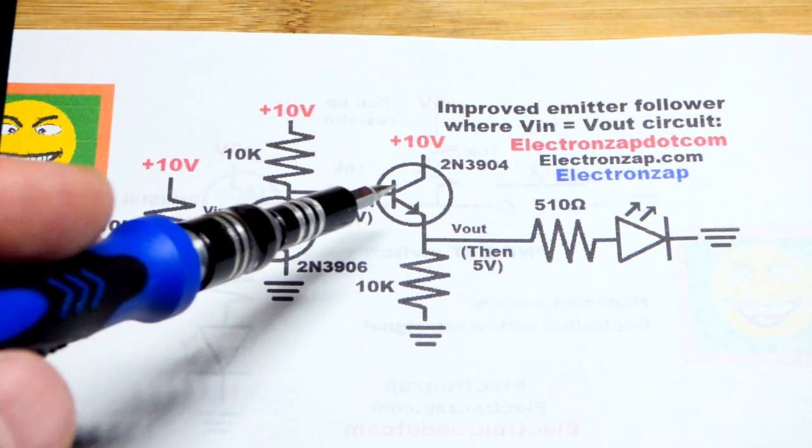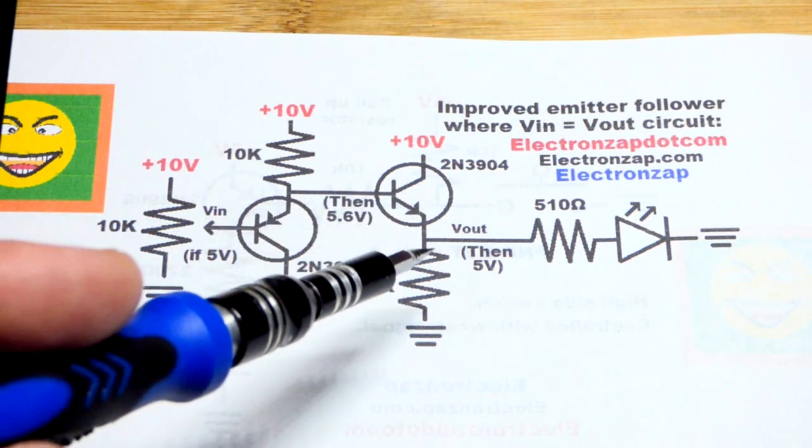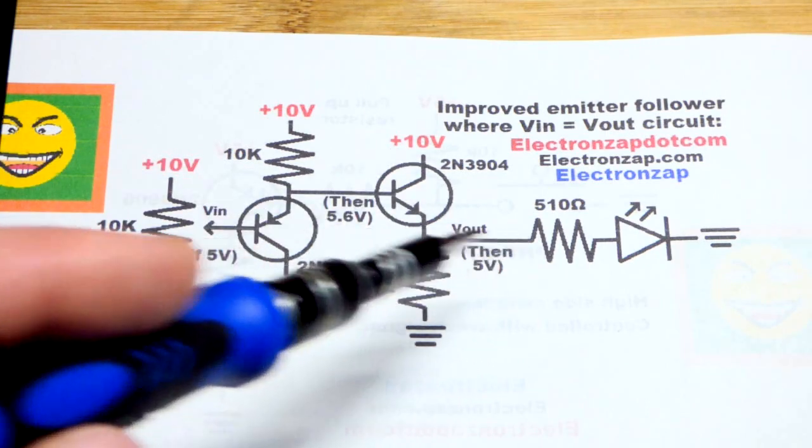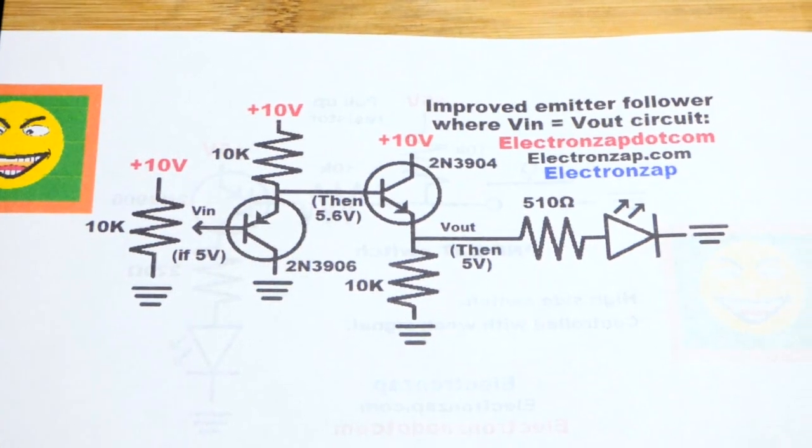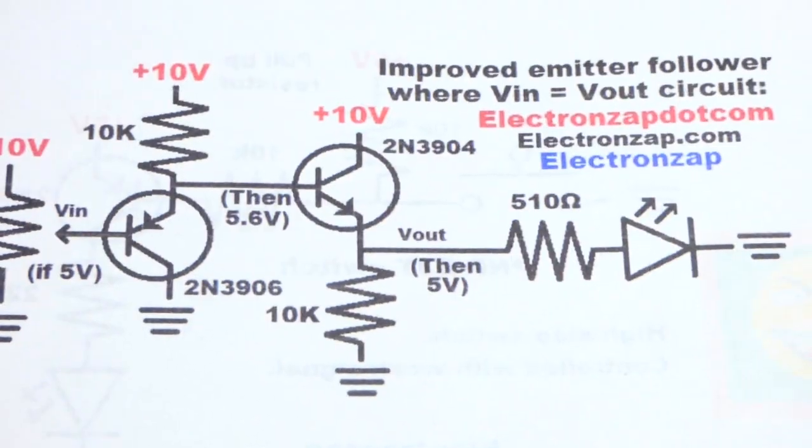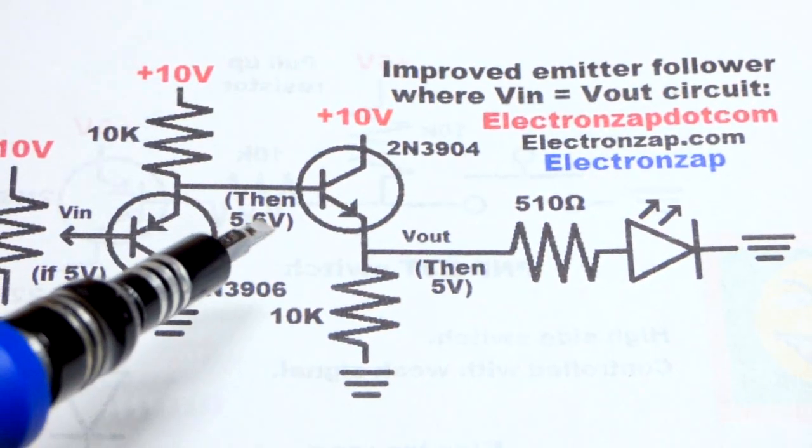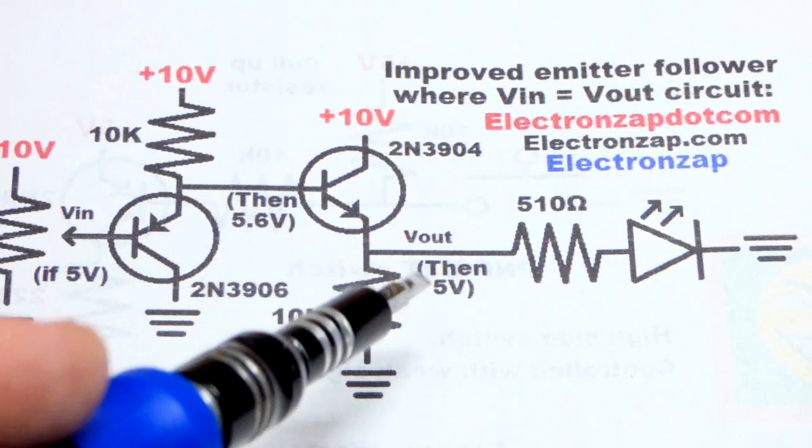What you can do is feed it to an NPN bipolar junction transistor as you see here and that will power the load really nicely. The only thing is with the trim pot you would have to set it to 5.6 volts to get 5 volts out.